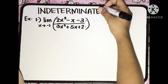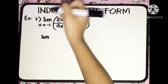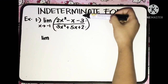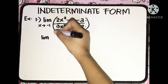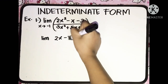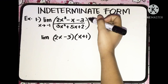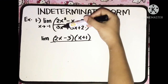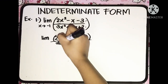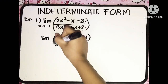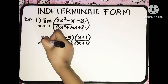Don't forget to write the limit. We still have the limit of the factored form. The factors of 2x squared minus x minus 3 are (2x minus 3) multiplied by (x plus 1). All over, the factors of 3x squared plus 5x plus 2 are (3x plus 2) times (x plus 1), as x approaches negative 1.